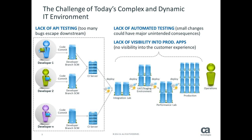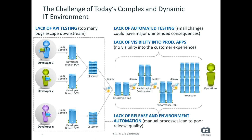The third one is basically visibility into production apps — what is the customer actually seeing, how does that application work in production? How can I get that information back to the developers so it can help them develop applications and get them out quicker? And last but not least, lack of release and environment automation. It's just taken us too long to get a release out, and today that's really what we're going to talk about — I'm going to concentrate on the release deployment side of things.